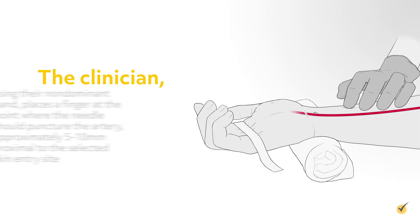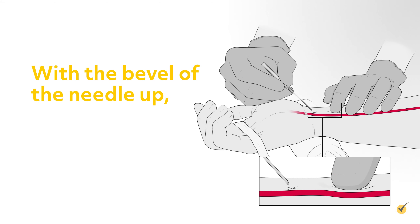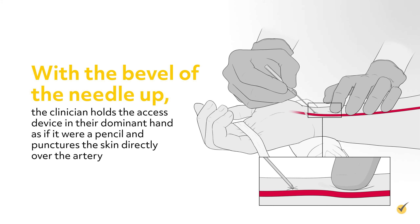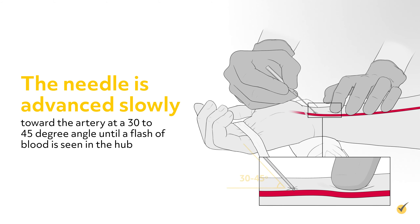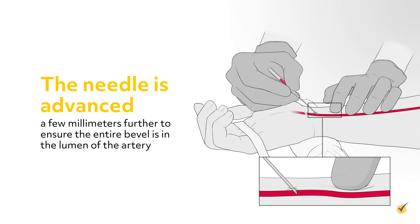The clinician, using their non-dominant hand, places a finger at the point where the needle should puncture the artery, approximately five to ten millimeters proximal to the selected skin entry site. With the bevel of the needle up, the clinician holds the access device in their dominant hand as if it were a pencil, and punctures the skin directly over the artery. The needle is advanced slowly toward the artery at a 30 to 45 degree angle until a flash of blood is seen in the hub, then advanced a few millimeters further to ensure the entire bevel is in the lumen of the artery.